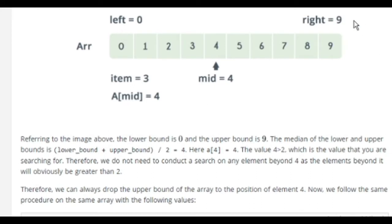Referring to the image above, the lower bound is 0 and the upper bound is 9. The median of the lower and upper bound is (lower + upper) / 2, which is 4. Here A[4] is 4. The value 4 is greater than 2, which is the value that you are searching for. Therefore, we do not need to conduct a search of any element beyond 4, as the elements beyond it will obviously be greater than 2.